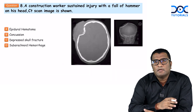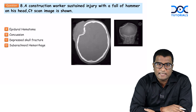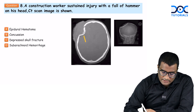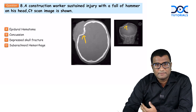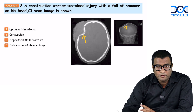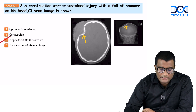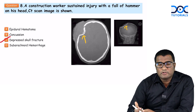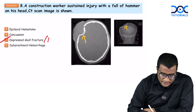Next: a construction worker sustained injury with a fall — a hammer hit on his head. A CT scan image is given showing a depressed skull fracture. This is how you would see a depressed skull fracture on CT or radiograph. In children, this is also called a pond fracture.